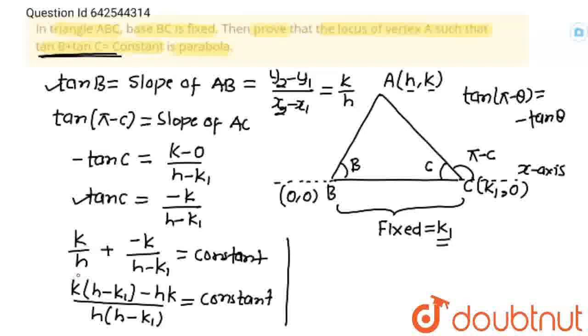Now, here I am going to multiply k inside this bracket. So, this will be hk minus k k1. hk minus hk is equals to constant times h square minus k1h.